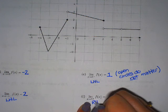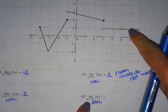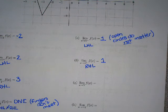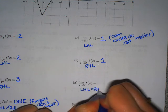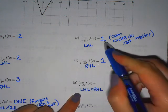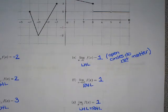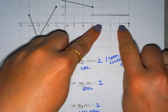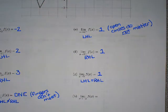Now approaching positive 5 from the positive side — the right-hand limit. I get near 5 from the right, hop on at 6, and follow it in. My y value is again 1. So for the two-sided limit as x approaches 5, our left-hand limit was 1 and our right-hand limit was 1 — they're equal, so the two-sided limit is 1. From the left of 5 and the right of 5 my fingers meet, so the answer is definitely 1.